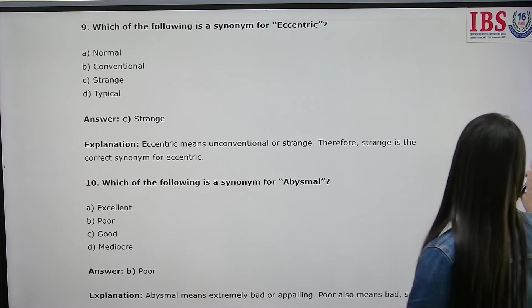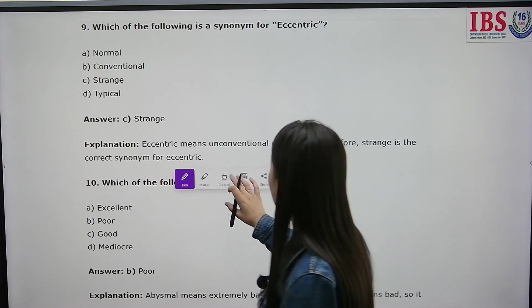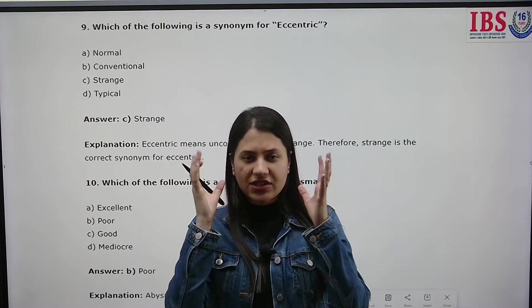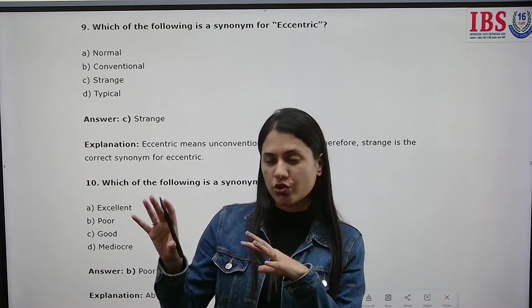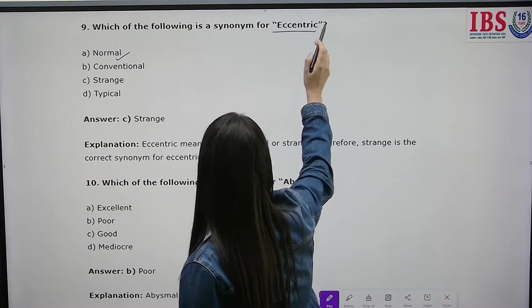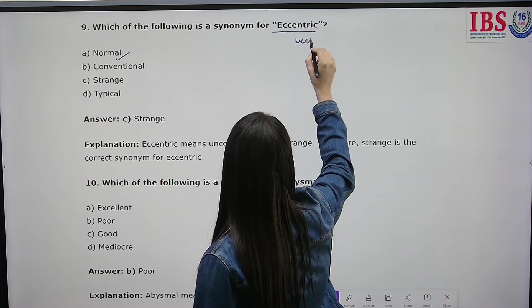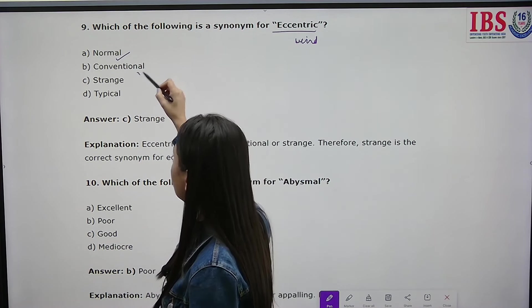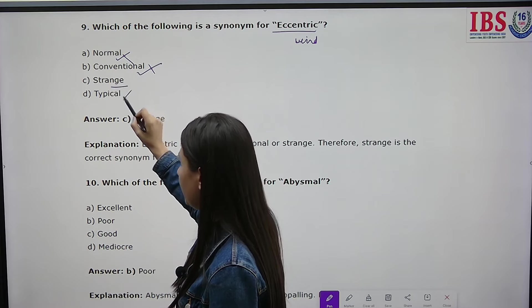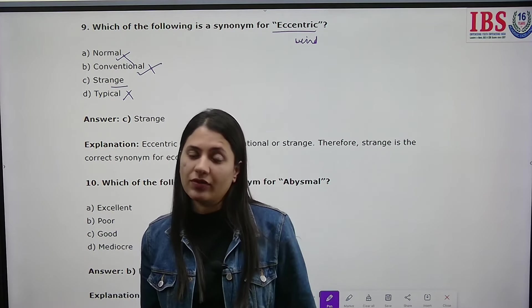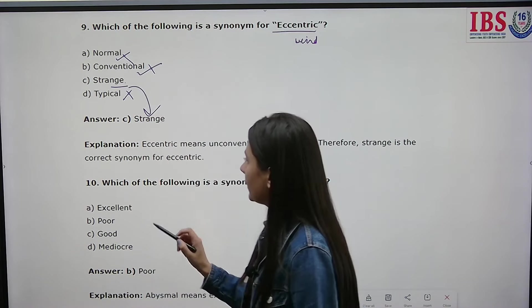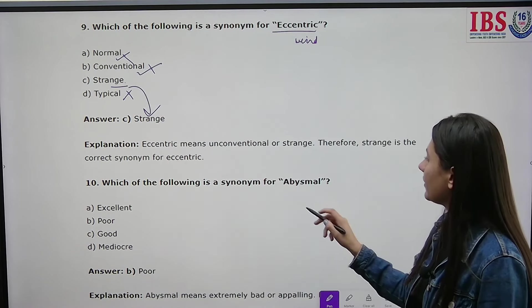Which of the following is a synonym for 'eccentric'? Eccentric describes someone who is absorbed in their own world and seems strange to others. The options are normal, conventional, strange, and typical. Normal and conventional are opposites. Typical also doesn't fit because eccentric means different. So strange is the correct answer.